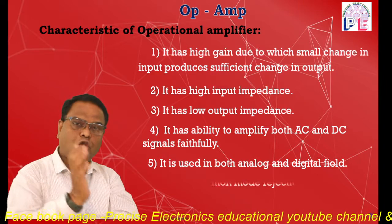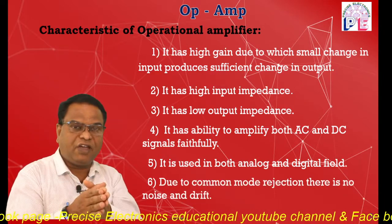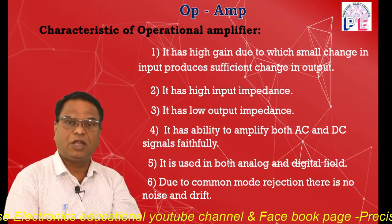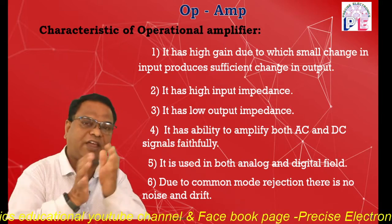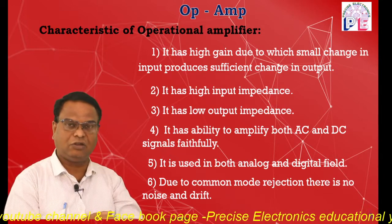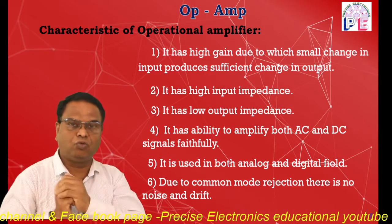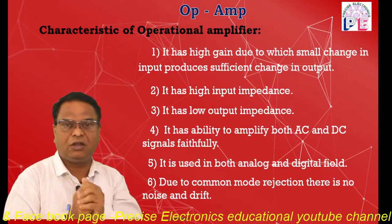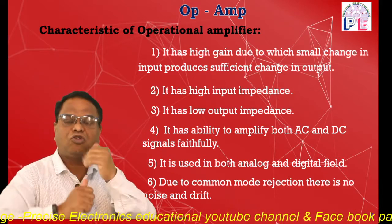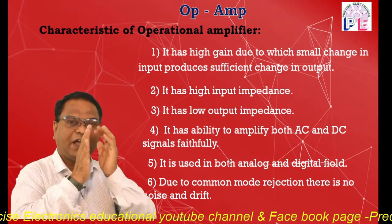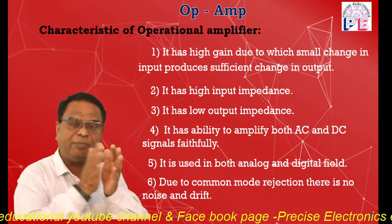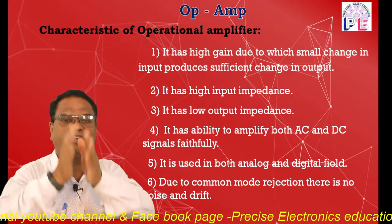Next, due to common mode rejection, this amplifier has the ability to remove the common mode signal. Due to rejection of the common mode signal, there is no noise — noise being unwanted electric signals. In ordinary amplifiers, noise causes the output to fluctuate and not remain constant, but in the operational amplifier the common mode signal is removed, so there is no noise and the output signal remains constant.